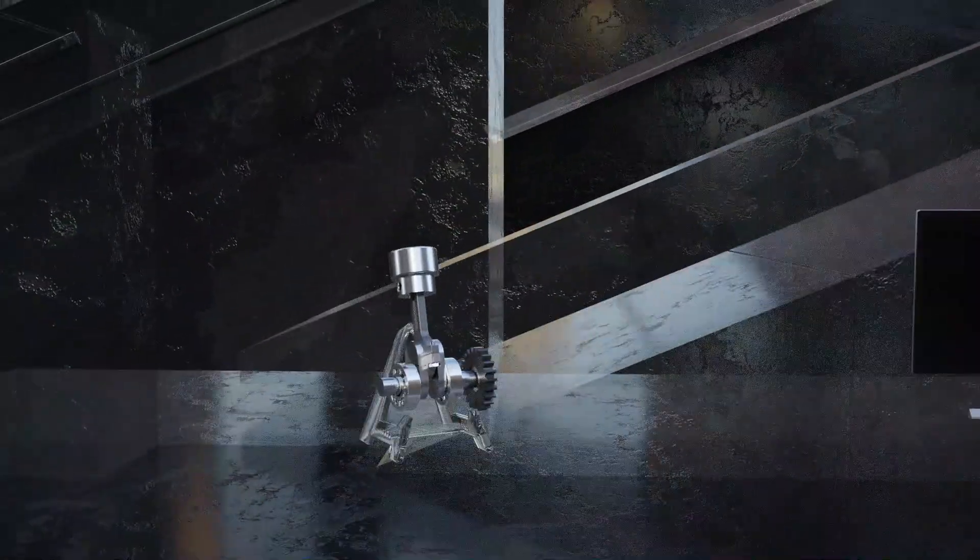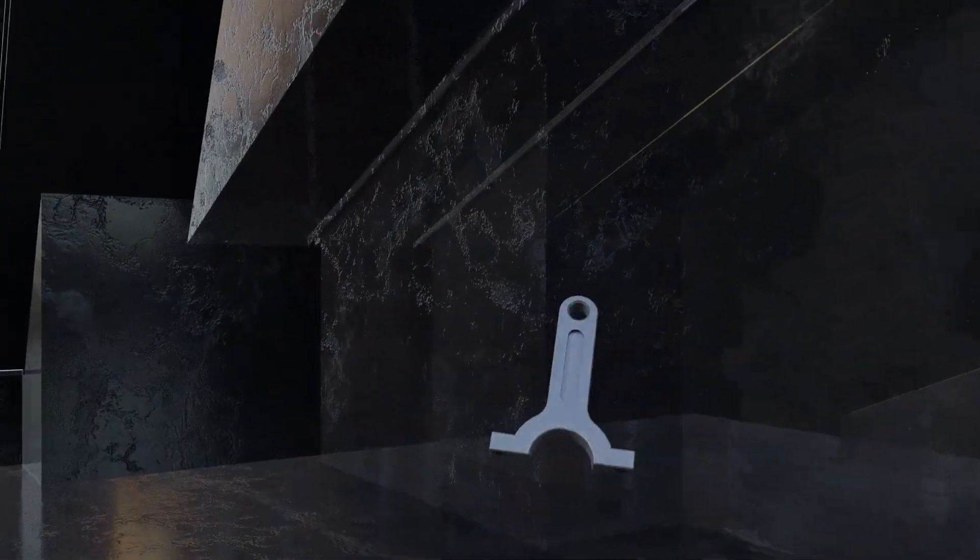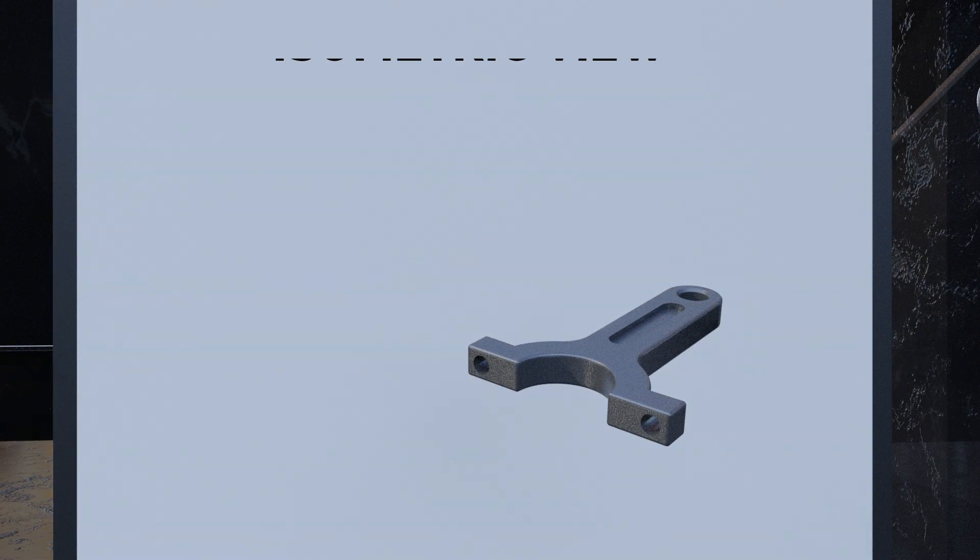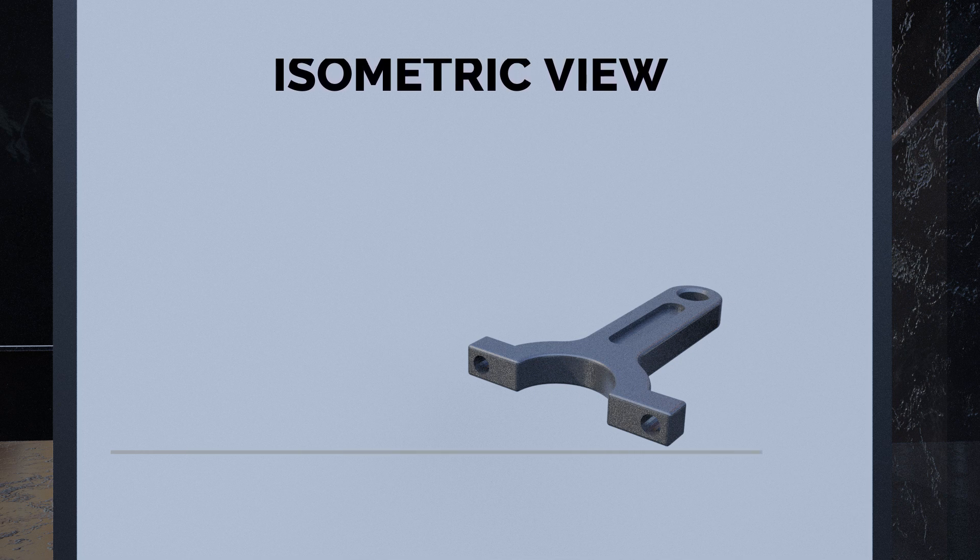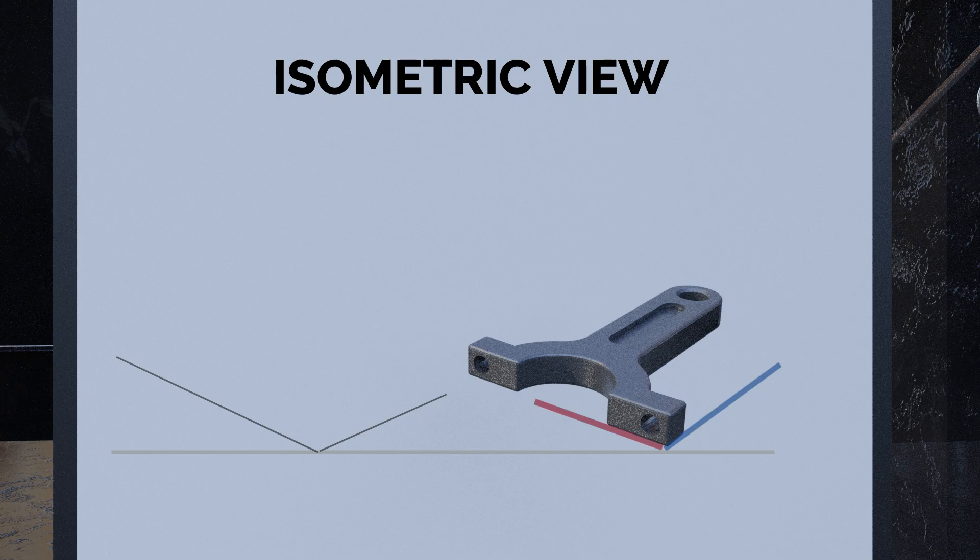Now let's see how to create an isometric view. To create an isometric projection, a drafter starts by drawing a horizontal line and then drawing two lines at a 30 degree angle to the left and right of the horizontal line. These lines represent the X and Y axis of the object's 3D space.